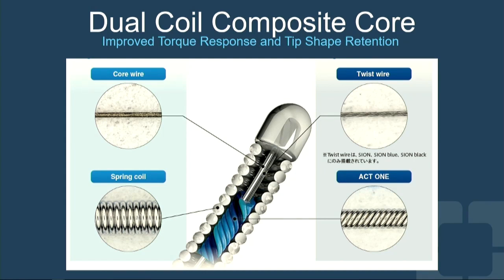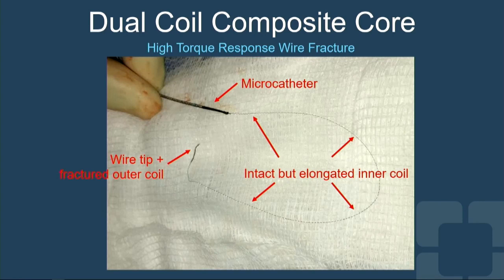A term called the dual coil composite core wire has been introduced — Asahi has pioneered this construction. There's a core-to-tip construction and a spring coil, but then there's a second core inside and a second coil inside the first coil. All of this improves steering, torqueability, and tip retention, making these wires very easy to use. I call the Xion Blue maybe the July wire — it's an amazingly effective wire. But if you over-torque these wires, you can break them, and the inner coil that breaks is not visible on X-ray. So you have to be mindful of that and use a microcatheter to try to retrieve it.